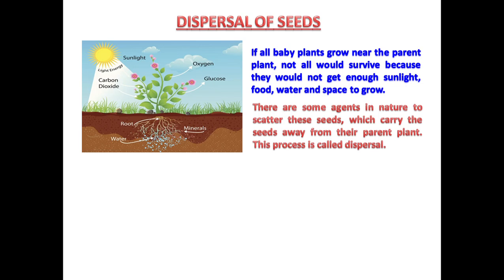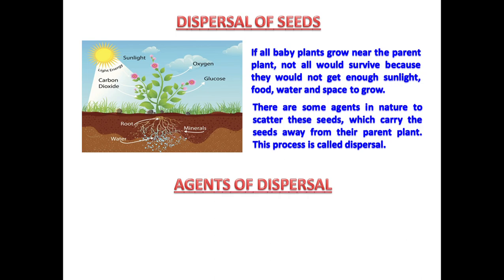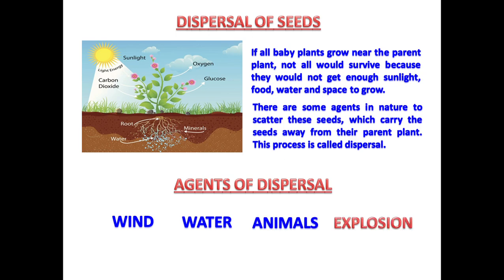This process is called dispersal of seeds. The agents of dispersal are wind, water, animals, and explosion. Let us learn about the seeds dispersed by each of these agents one by one.